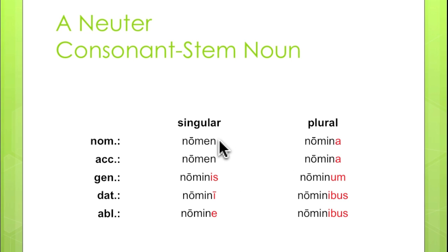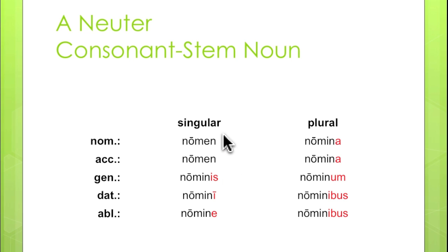Once again, we're not going to identify a particular ending for the nominative singular, because in the third declension, nominative singulars have no particular ending. And of course that means the accusative will also have no particular ending, because in neuter nouns the accusative and nominative must be the same. But from that point on, we have: nominis, nomini, nomine — nomina, nomina, nominum, nominibus, nominibus. These endings in red constitute the neuter endings for consonant-stem nouns in the third declension.